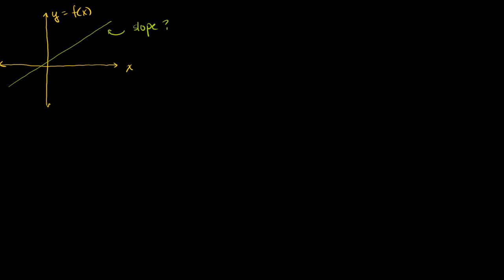What we do is we take two points on the line. So let's say we take this point right here — let's say that is the point x is equal to a. And then what would this be? This would be the point f of a, where the function is going to be some line. We could write f of x equals mx plus b. We don't know what m and b are, but this is all a bit of review. So this is a, and the y-value is what happens to the function when you evaluate it at a.